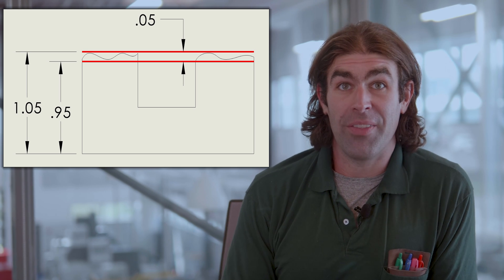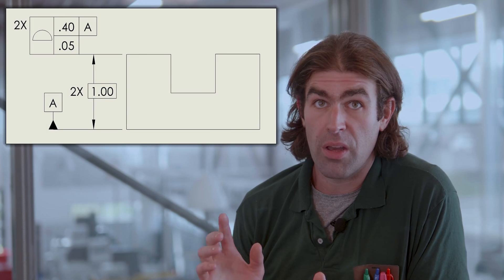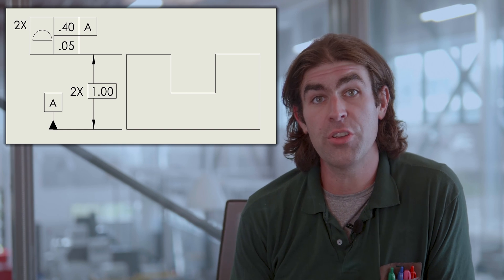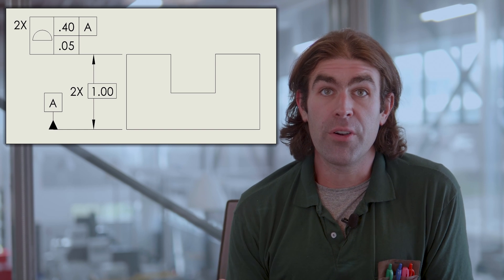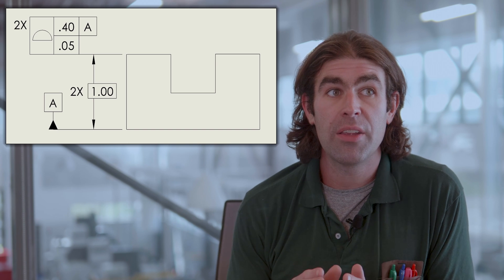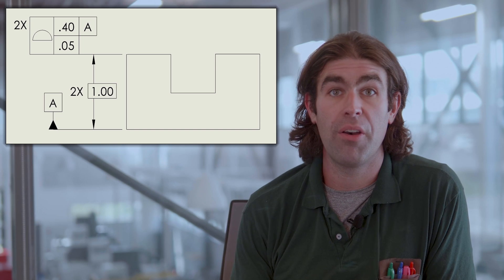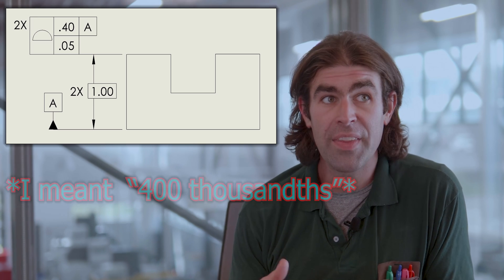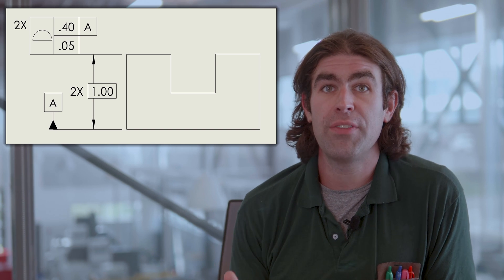The way we get around this is by using what's known as a composite profile tolerance. This is a great way to learn composite profiles because it's very similar to using a size dimension with a tolerance. In the first segment of this composite profile you'll notice it's got a datum reference. This indicates that this controls the location of the surfaces. It's got a wide tolerance of 40 thousandths and then the second segment refines that to 50 thousandths.